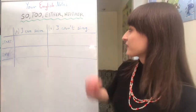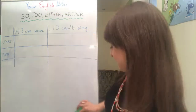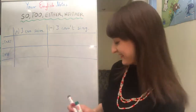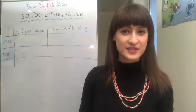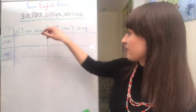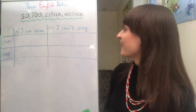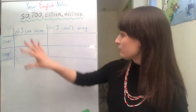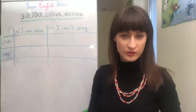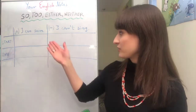So look at the board. I can see I've made a mistake, because it should be negative here. I put two sentences here: the first is positive — "I can swim" — and the second is negative — "I can't sing" — and I would like you to look here and see which of these words we can use in order to agree, in order to say that you are also in this situation.